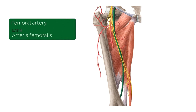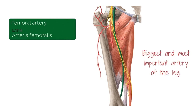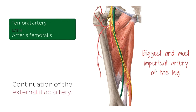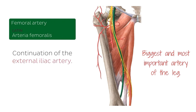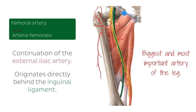The femoral artery is the biggest and most important artery of the leg. It is the continuation of the external iliac artery, which in turn is the continuation of the aorta — the most important artery in the body. It becomes the femoral artery once it crosses the inguinal ligament, as seen here highlighted in green.